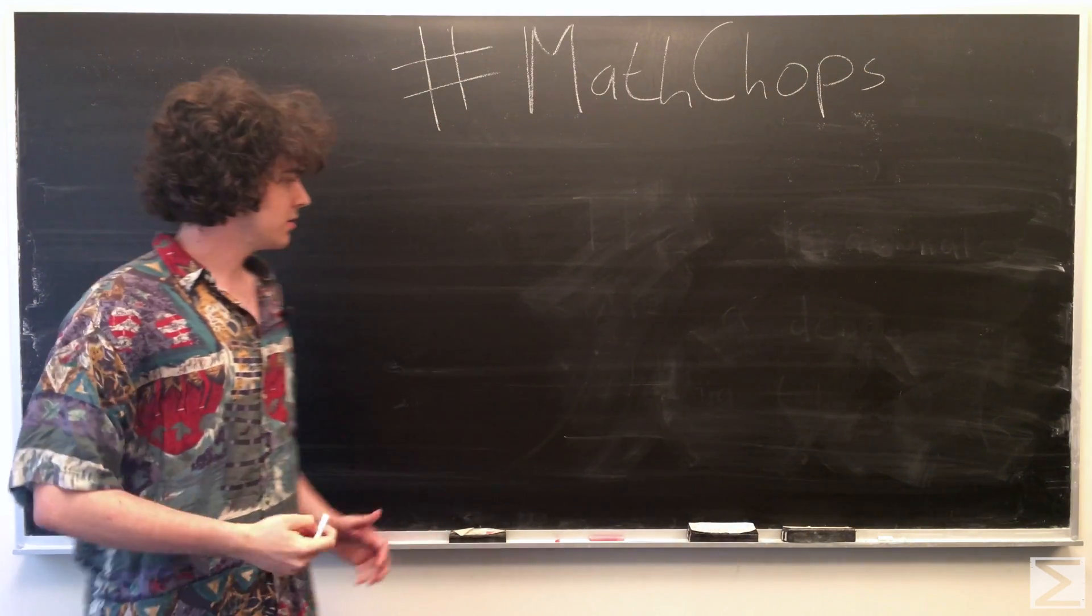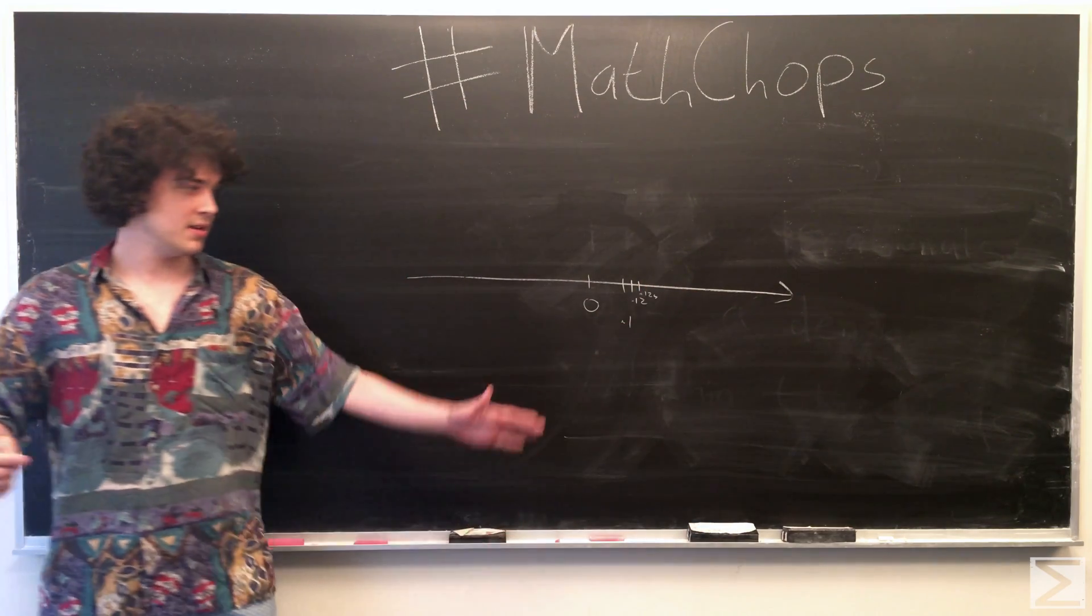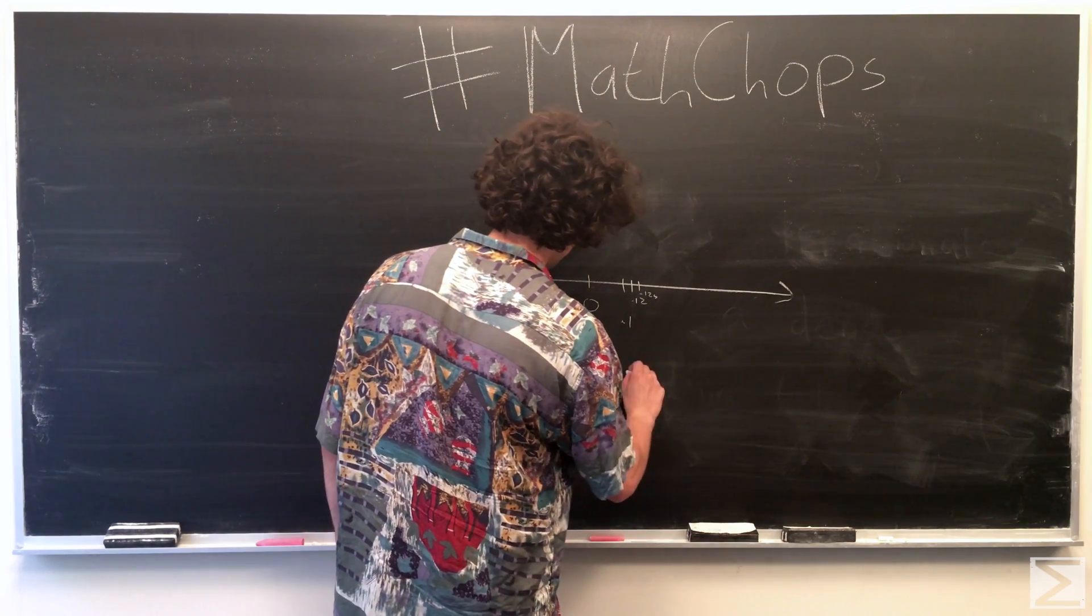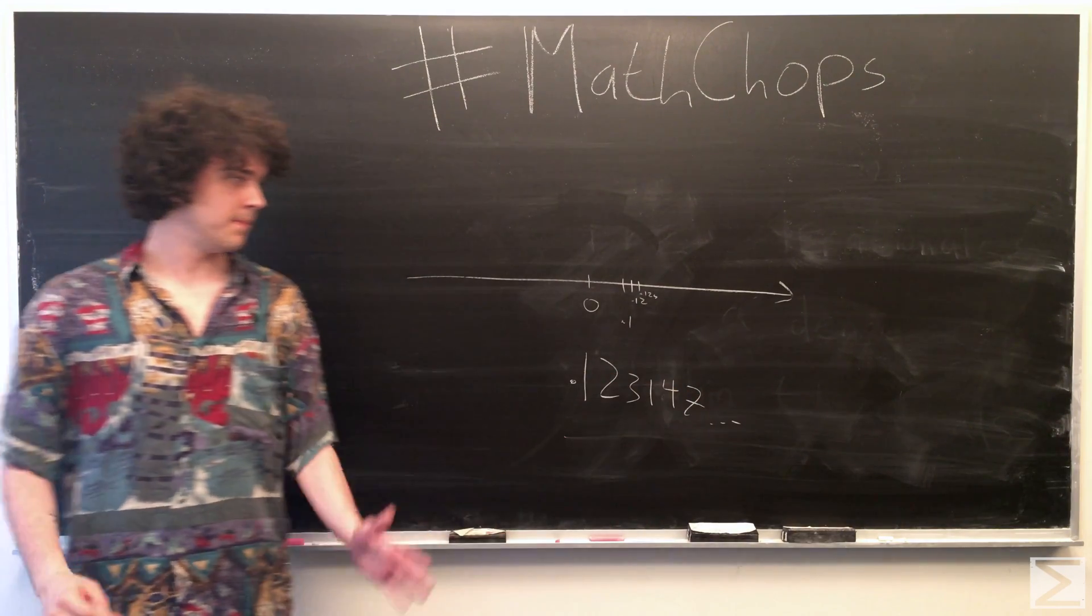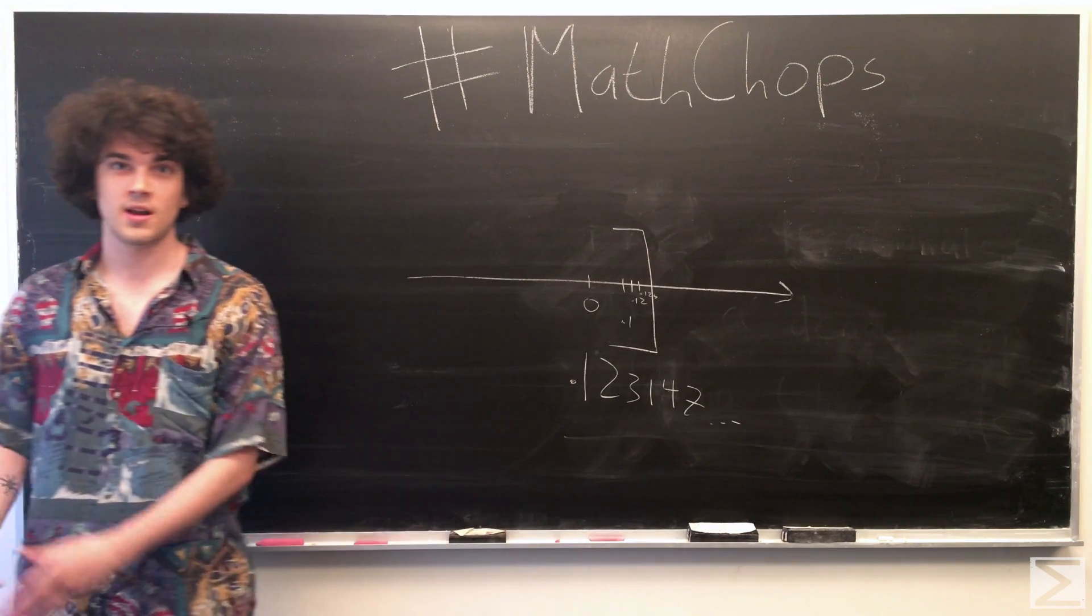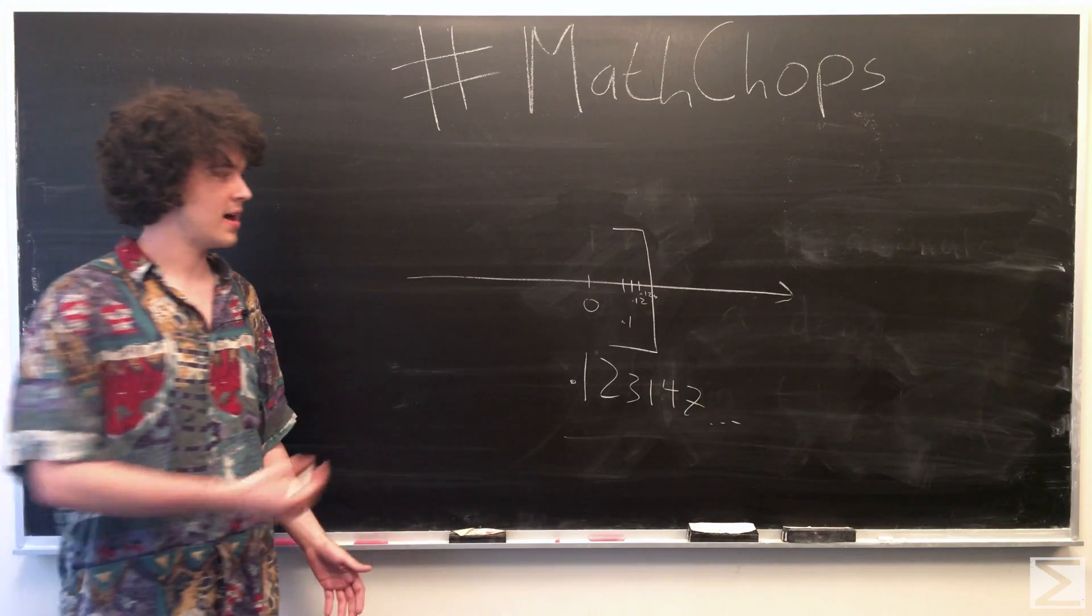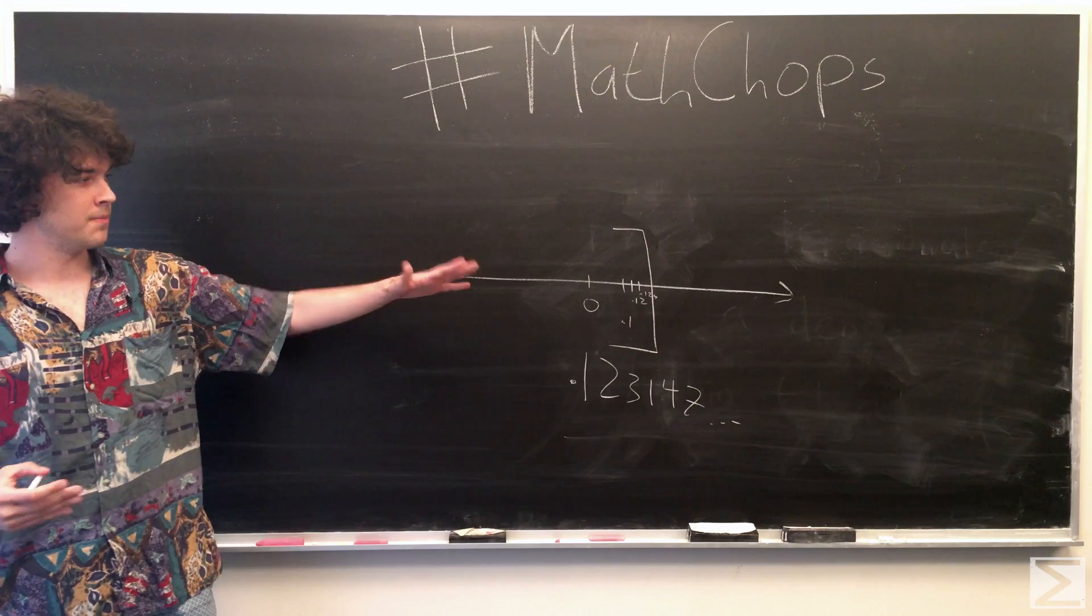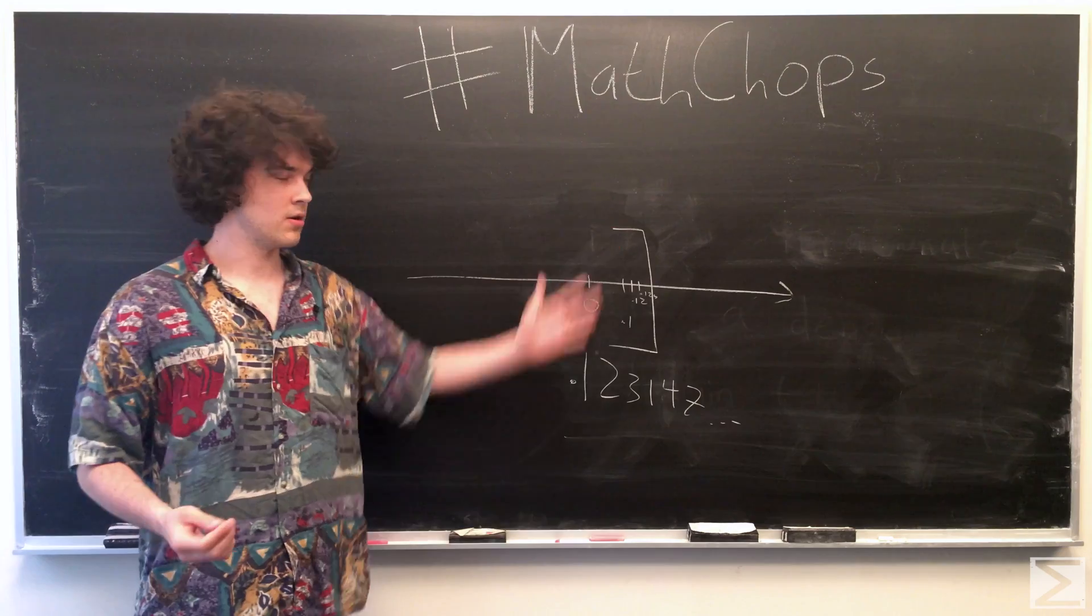So we're basically looking at, we take any sort of infinite decimal expansion, so 0.123147, and we can imagine that on a number line, and we can imagine taking a precise cut at a certain point after this decimal expansion, and we're going to define our real numbers as this set, kind of codifying all the rational numbers that come before this point as our real number.